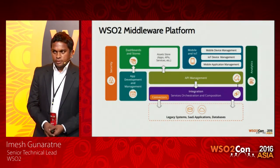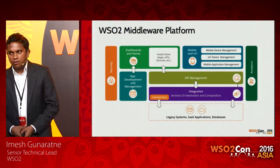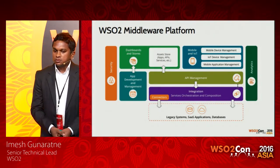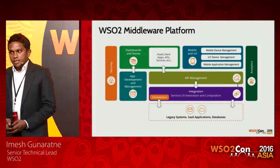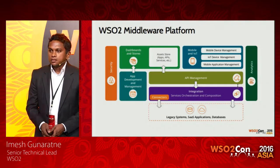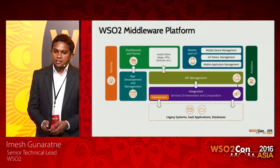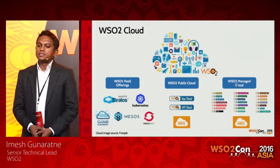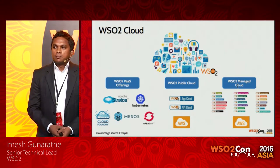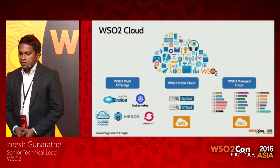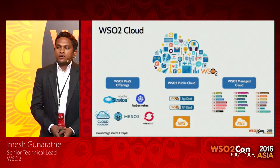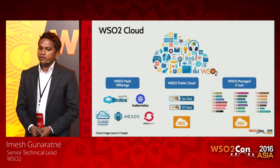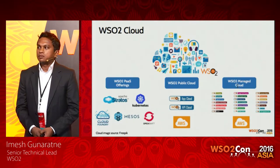Coming to the WSO2 middleware stack, we have a complete middleware platform starting from security, integration, API management, analytics, IoT, dashboards, and many more. If we need to build a solution using the WSO2 middleware stack in the cloud, WSO2 provides two different platform-as-a-service offerings: Apache Stratos and Kubernetes. We are also planning to provide artifacts to run WSO2 products on Cloud Foundry, Mesos, and OpenShift, and are currently doing research in those areas.